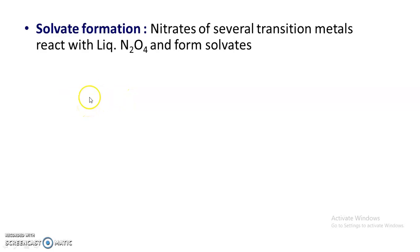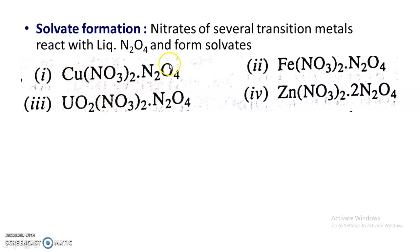Regarding solvate formation, liquid dinitrogen tetroxide has the ability to form solvates. Nitrates of several transition metals react with liquid dinitrogen tetroxide and form solvates. For example, copper forms a solvate — copper nitrate·N2O4. Iron forms Fe(NO3)2·N2O4. Uranium nitrate and zinc also form solvates with dinitrogen tetroxide. Uranium is an f-block element that also forms a solvate with dinitrogen tetroxide.